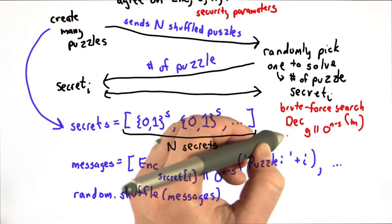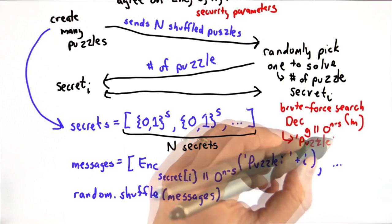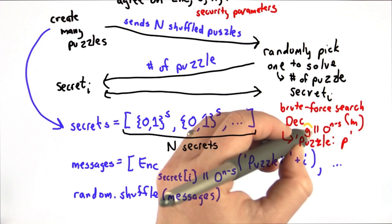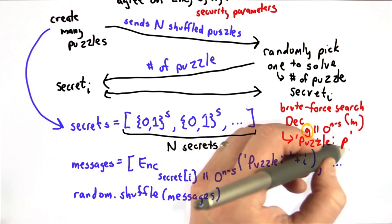Eventually, he's going to find one of these decrypts to puzzle followed by a number. At this point, Bob knows the guess, so he knows the secret that was used for that, and he knows the puzzle number.